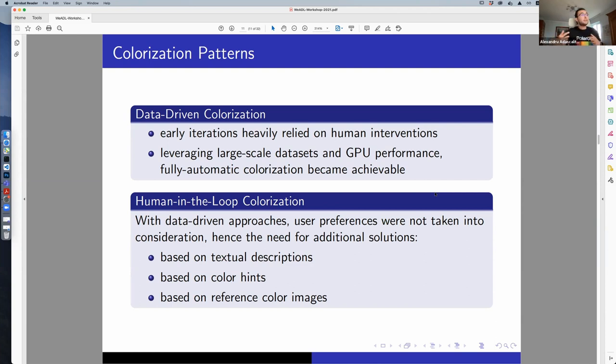But if you make the process fully automated, then you lose the human preference. And as we all know, we want to express our preferences in whatever we do. So there are human-in-the-loop colorization patterns. These patterns are not fully automatic. You can have some input by textual descriptions, color hints, and preference color images.